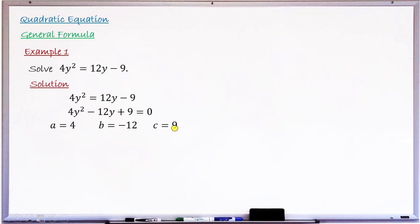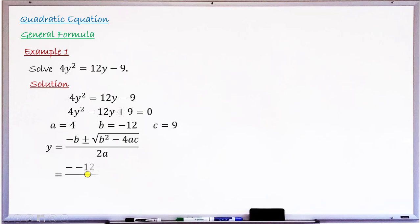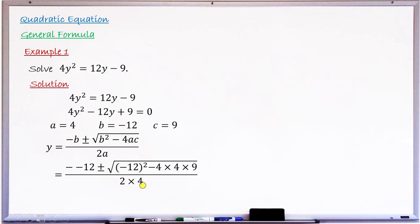I will now write the general formula, into which I am going to substitute A, B, and C. The general formula says Y equals minus B plus or minus the square root of B squared minus 4AC, all over 2A. So I am now going to substitute appropriately. Substituting correctly, I now have minus minus 12 plus or minus the square root of minus 12 squared minus 4 times 4 times 9, all over 2 times 4.